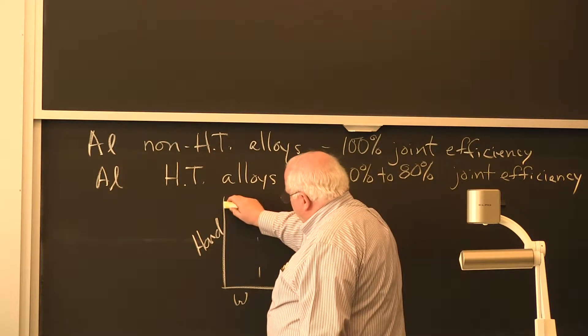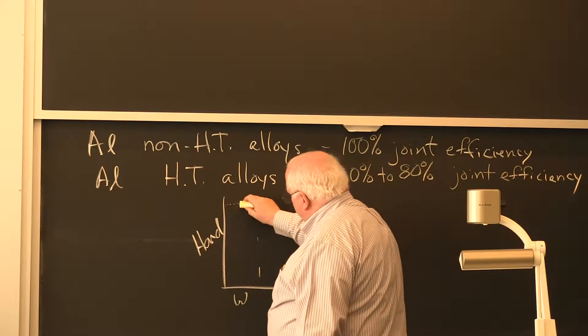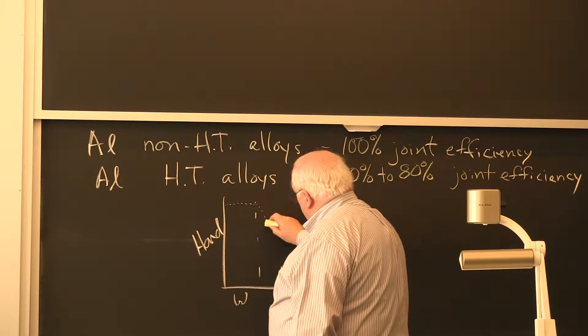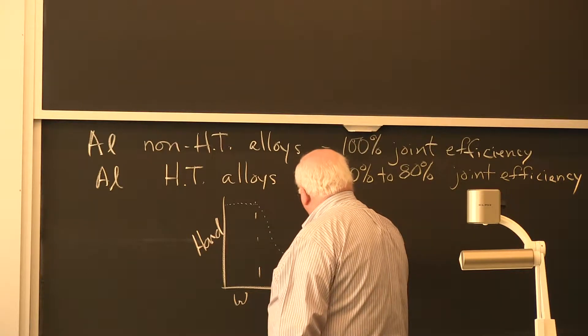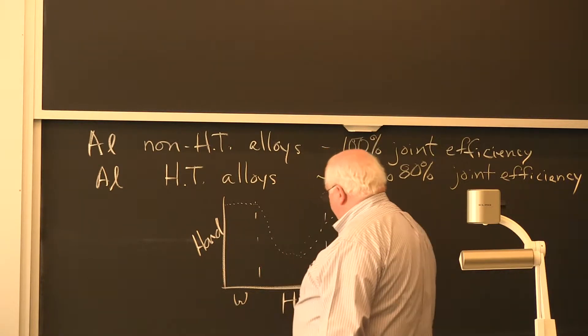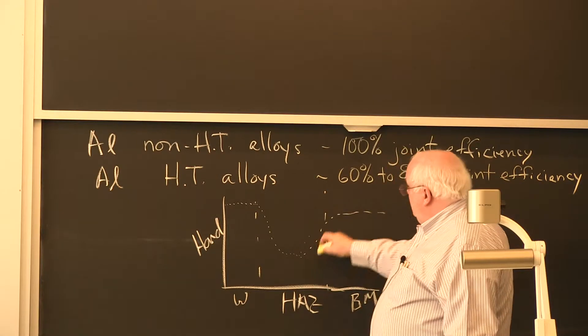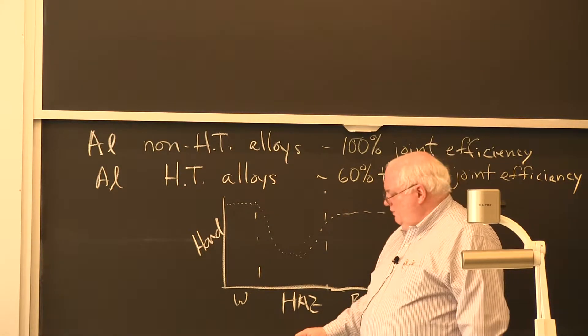You do a micro-hardness traverse in the weld. You can alloy, make it fairly strong. Then in the heat-affected zone you're going to have a softening. And in the base metal you'll have reasonable strength.